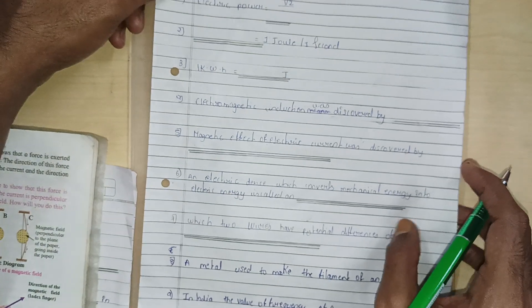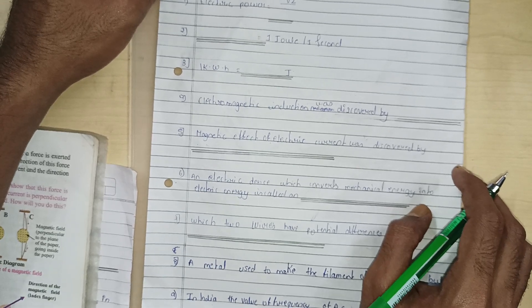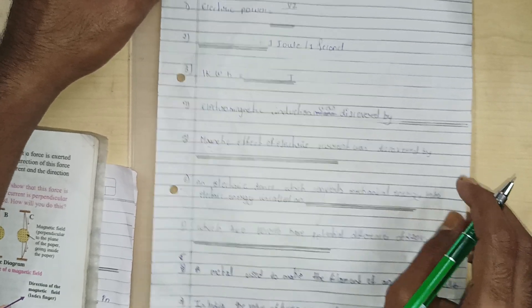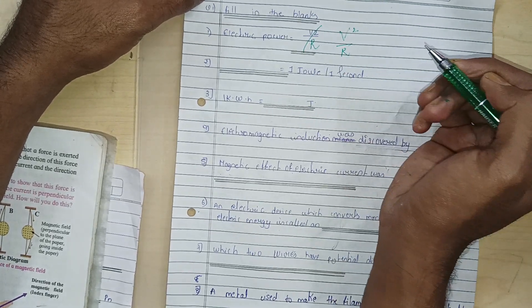Now when we move on to the fill in the blanks questions. The very first question that we have is electric power. The formula for electric power is V square upon R. V square upon R.